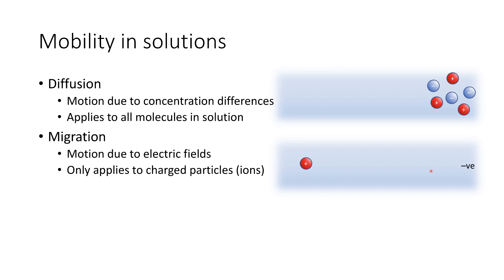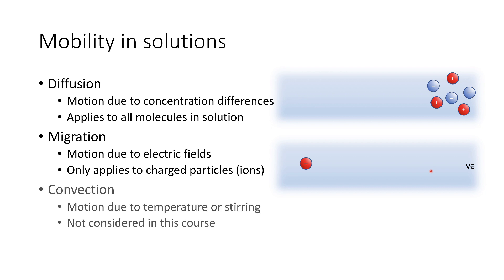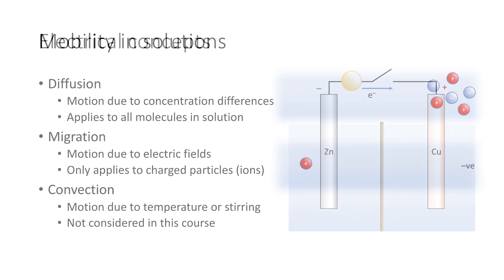The third type of motion relating to mobility is something called convection, which is motion due to thermal phenomena or simply stirring the solution. It's not considered in this course, but it's something to be aware of, as it's something you are probably already familiar with.